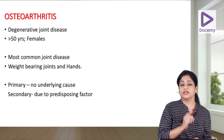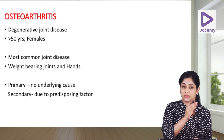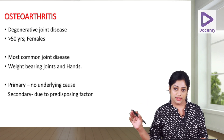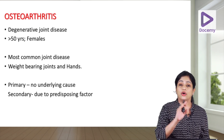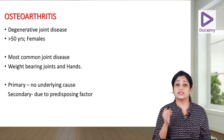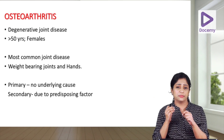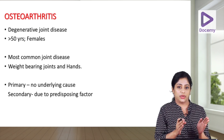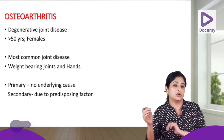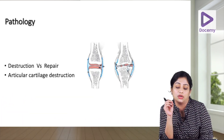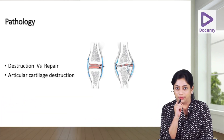Osteoarthritis can be primary, where there is no underlying joint disease, or it can be secondary osteoarthritis, where there is an underlying predisposing condition within the joint that leads on to secondary osteoarthritis.